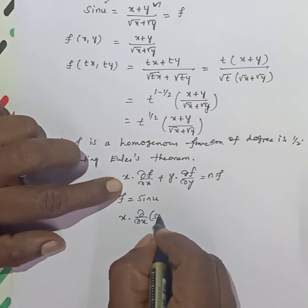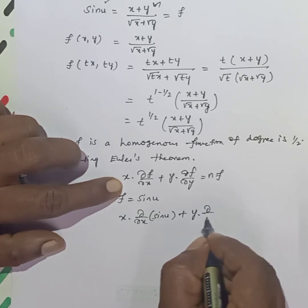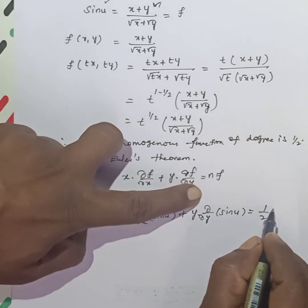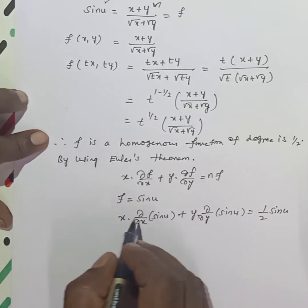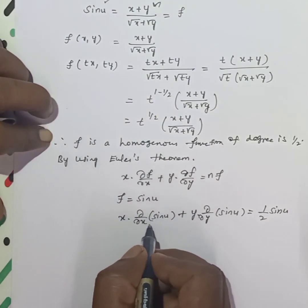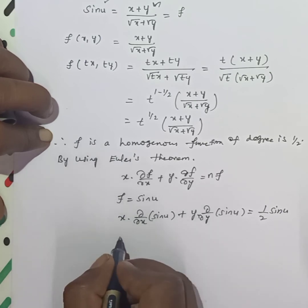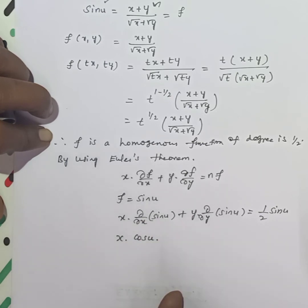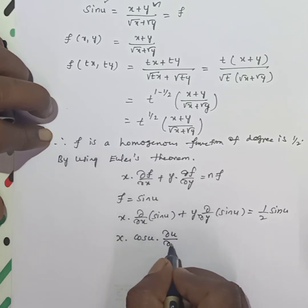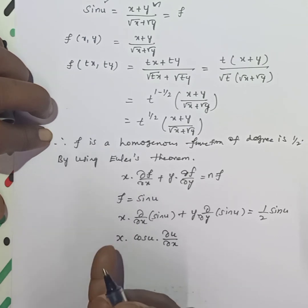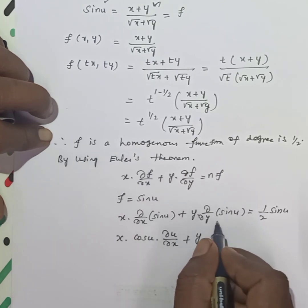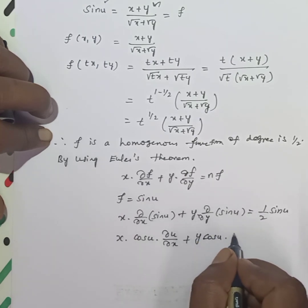Since f equals sin(u), we substitute: x times ∂(sin u)/∂x plus y times ∂(sin u)/∂y equals n times sin(u), where n equals one-half. Differentiating sin(u) with respect to x using the chain rule gives cos(u) times ∂u/∂x. So: x times cos(u) times ∂u/∂x plus y times cos(u) times ∂u/∂y equals one-half times sin(u).